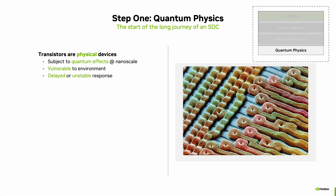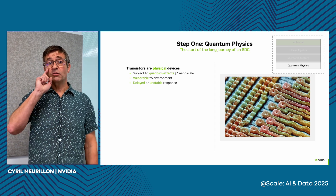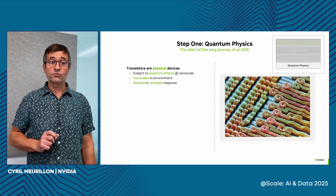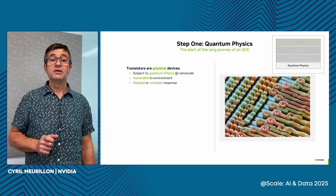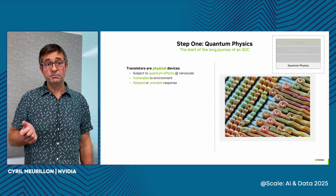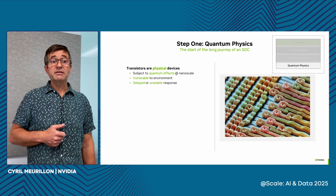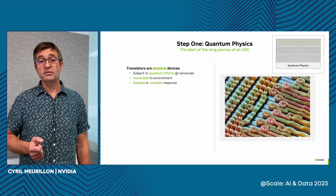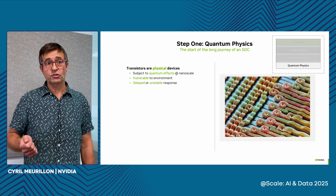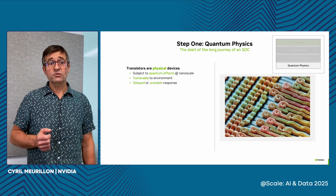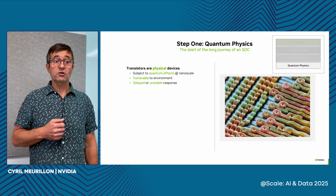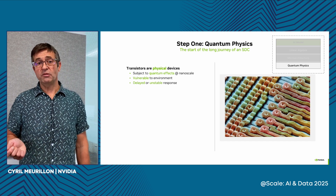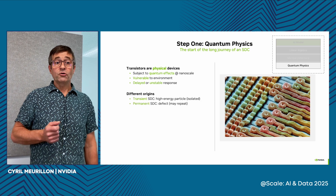It all starts with quantum physics. Transistors are the basic building blocks of all chips that carry and process binary bit information. At a very basic level, transistors are quantum physics devices — we're not talking about quantum computing here. However, at the scale of today's transistors, they are subject to quantum effects, meaning certain probabilistic behaviors become significant. This makes them vulnerable to perturbations such as high-energy particles, voltage, and temperature. When that happens, the transistor can respond more slowly or become temporarily unstable, jumping back and forth between the open and closed state.